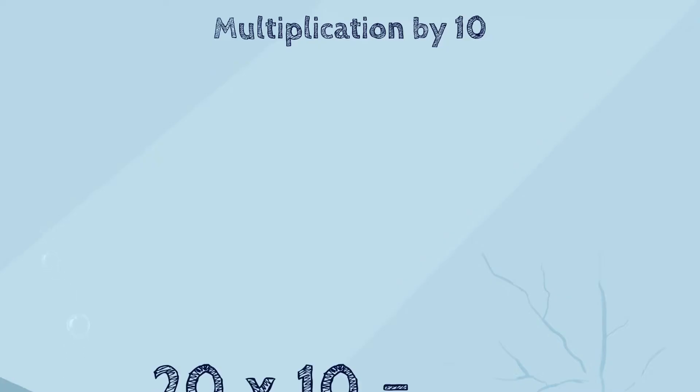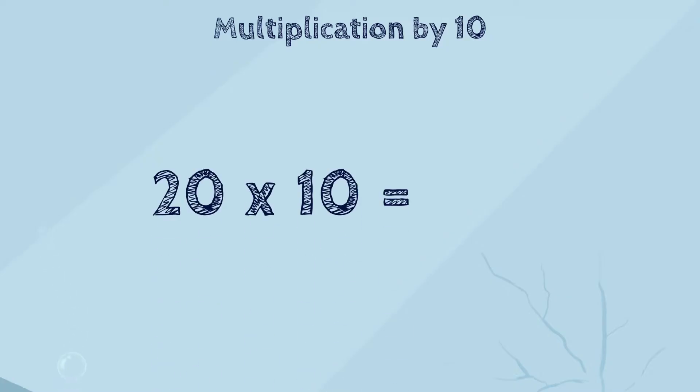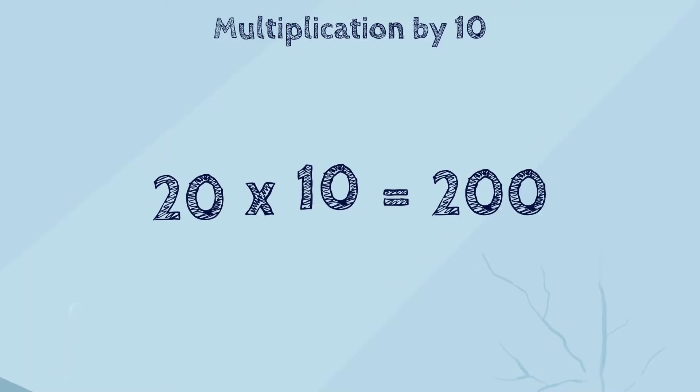So, let's try 20 times 10. What do you think the answer is? 200! Yes, and we also know that the order of the numbers doesn't matter in multiplication. So, this trick can still be used if 10 is the first number, too. 10 times 20 equals 200. And 20 times 10 equals 200.